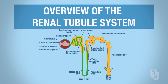Once that filtrate passes through the ascending loop of Henle, it's going to pass through the distal convoluted tubule, then through the collecting duct. Once it's in the collecting duct, we're going to call it urine. Then it'll pass through the minor calyx to the major calyx to the renal pelvis.